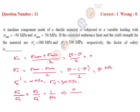Putting values: 0 by sigma Y (300) plus sigma variable (50) divided by sigma E dash (100) equals 1 by factor of safety. Solving this, we get factor of safety equal to 2. This is our answer.